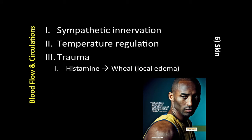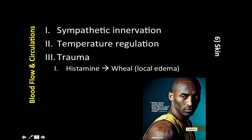Moving along to the skin. The skin has extensive sympathetic innervations, and cutaneous blood flow is under extrinsic control. Temperature regulation is the principal function of the cutaneous sympathetic nerves. If we have increased ambient temperature, this leads to cutaneous vasodilation, allowing dissipation of excess body heat.